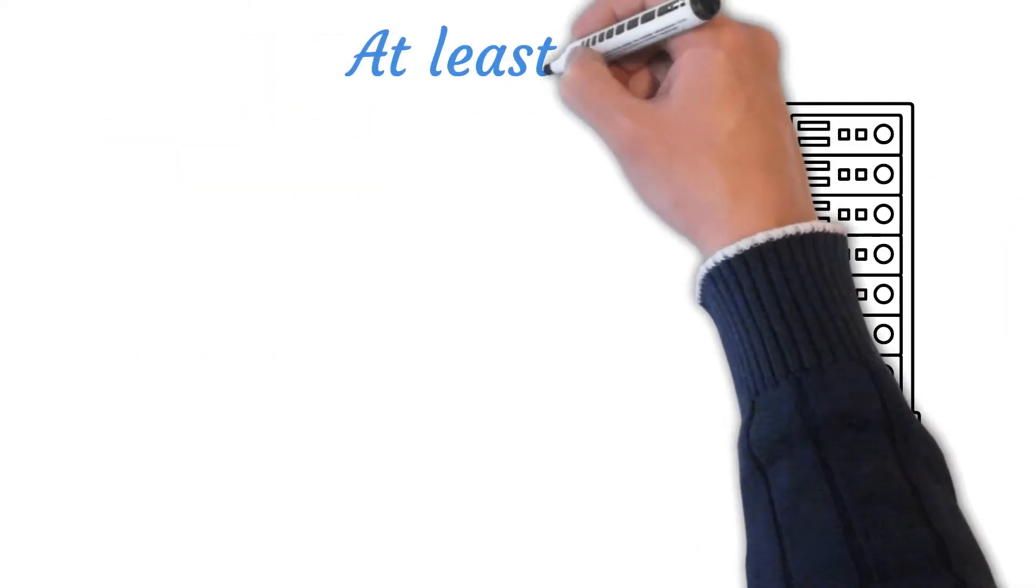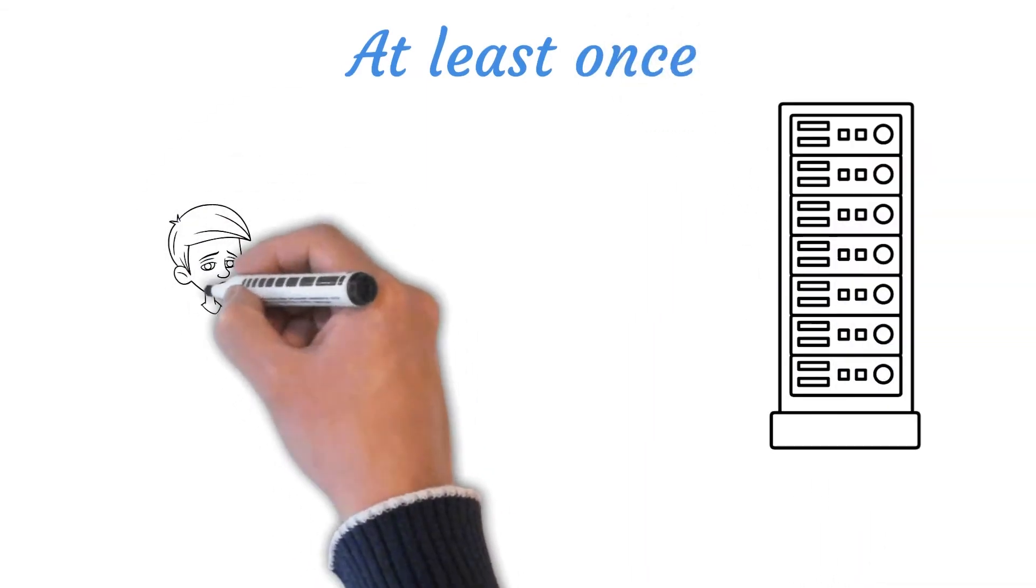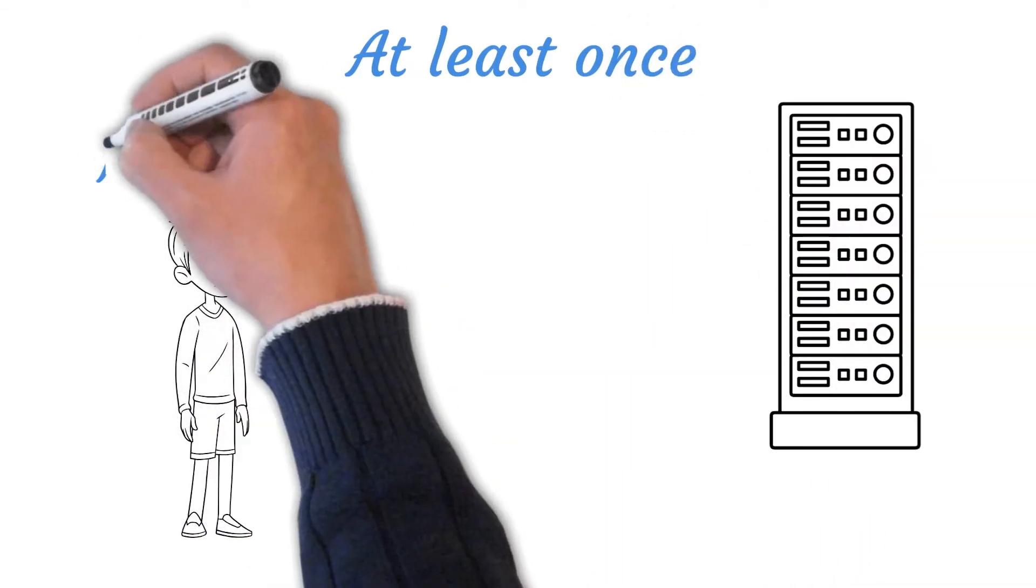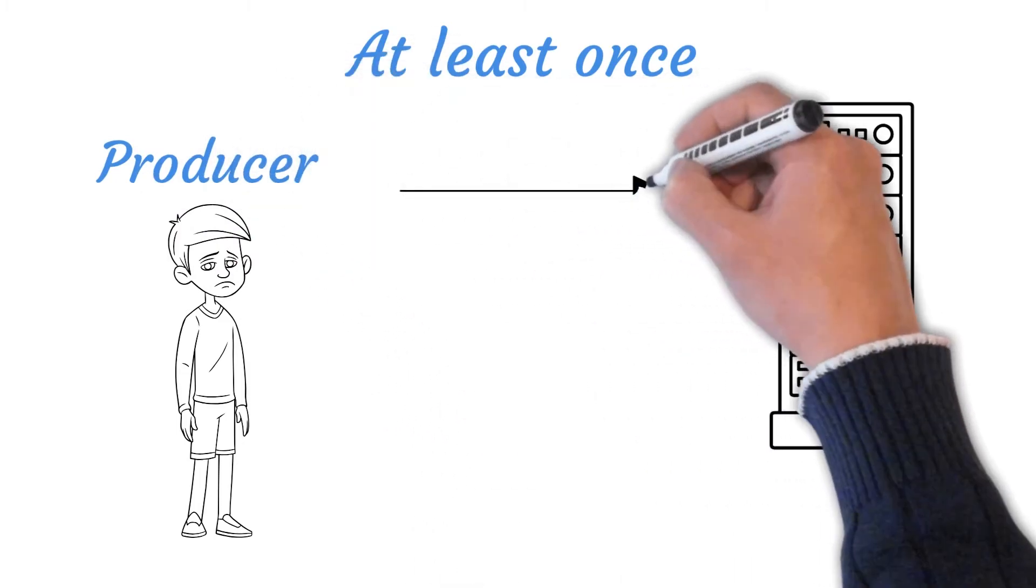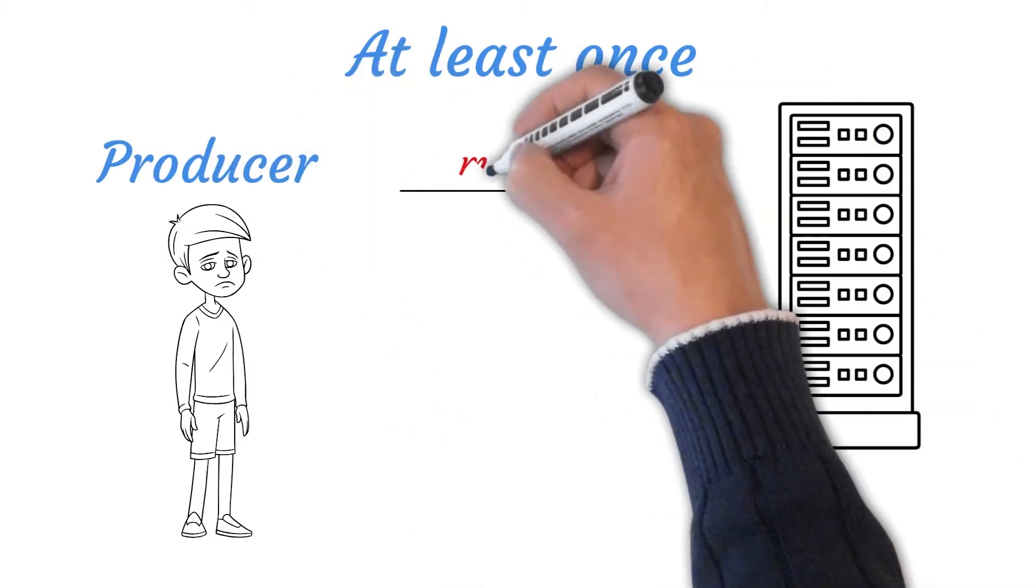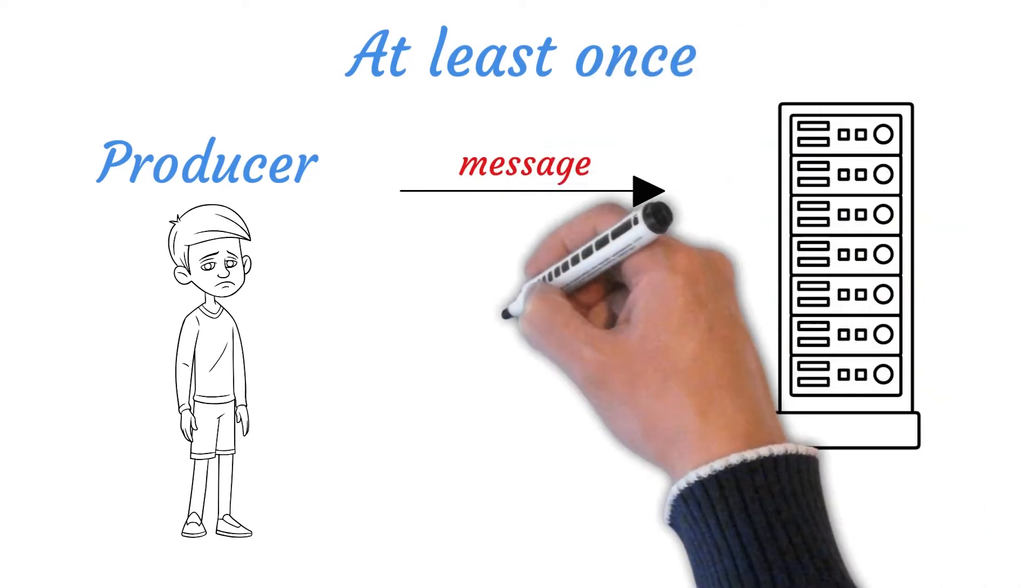For the at least once delivery semantic, a message can be delivered one or more times but will never be lost. Duplication of events can occur due to the combination of disrupted communication and retrying events.